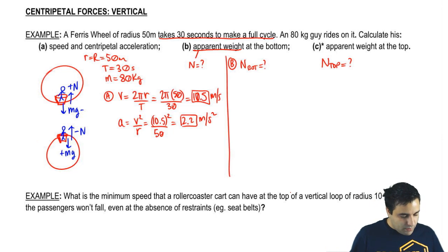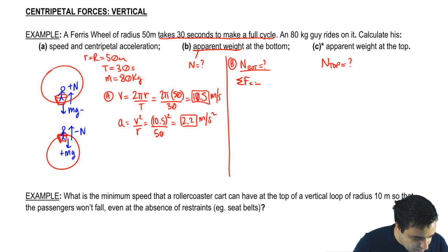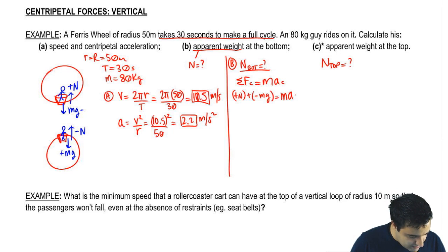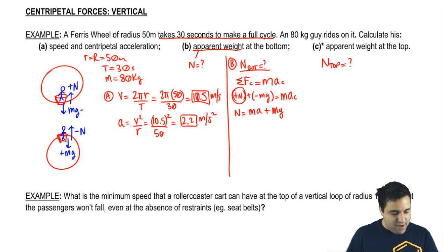So, F equals ma is how I'm going to find forces. That's how you always find forces. Sum of all forces in centripetal is F equals ma. And the forces are normal positive and mg negative. This is for the bottom, so the first picture here, equals mac. I'm looking for normal, so I hope you see right away, normal is just ma plus mg. I have a, a is 2.2, so I can just plug in the numbers and I get the answer.